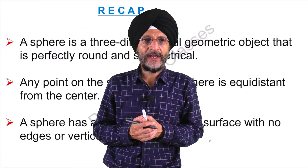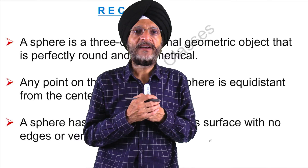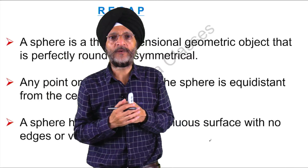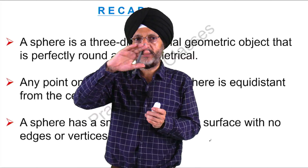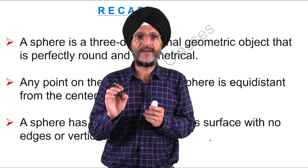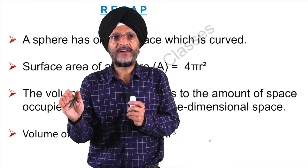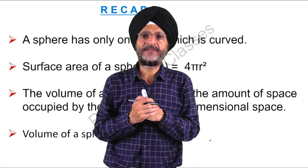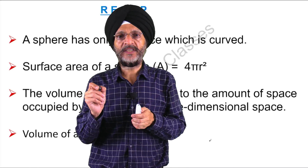A sphere is a 3-dimensional geometric object that is perfectly round and symmetrical. Any point on the surface of the sphere is at equal distance from the center. The surface area of a sphere is equal to 4 pi R squared, and the volume of a sphere — the amount of space it occupies in 3-dimensional space — is calculated by the formula 4 over 3 pi R cubed.